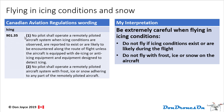The next regulation is 901.35, cleverly called Icing. I had hoped it had something to do with cakes, but no — it's flying in icing conditions and snow. An icing condition is, obviously in the winter, when temperatures are such that you could have ice or frost forming on the surface of your aircraft. This can not only add weight to your aircraft, but on flight surfaces like wings or propellers, ice and frost can severely limit your lift. Be extremely careful when flying in these conditions. Do not fly if icing conditions exist or are likely during the flight, and do not fly with frost, ice, or snow on the aircraft. The wording is pretty severe — it sounds like if you have a snowflake on your drone, don't take off. I think this would be interpreted with reason, but you never know.